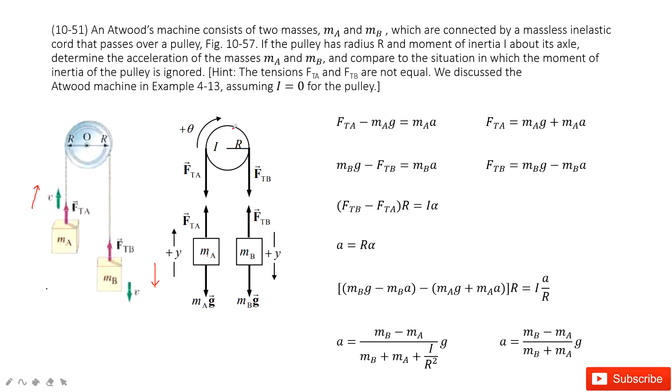And on the pulley, we can see at two sides, we still have the tension for A and the tension for B. Now, we need to consider this pulley to rotate. When it rotates, we have the torque.